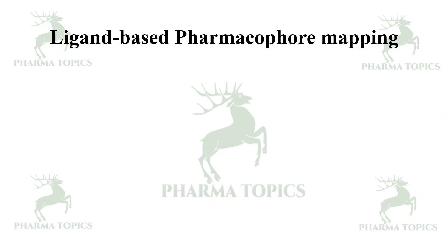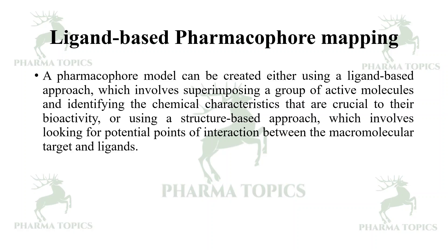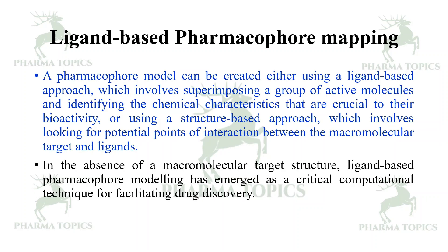There are different types of pharmacophore modeling. The first is ligand-based pharmacophore modeling. A pharmacophore model can be created using a ligand-based approach, which involves superimposing a group of active molecules and identifying the chemical characteristics crucial to their bioactivity, or using a structure-based approach, which involves looking for potential points of interaction between the molecular target and the ligands in the absence of a macromolecular target structure.